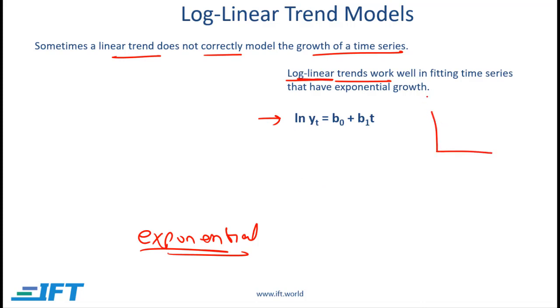So with log linear trend models the y-axis will be the natural log of some variable. If our variable is y then we say natural log of y and the x-axis would be time. So you might wonder where this is coming from. When we have exponential growth we basically say that y is equal to e to the power of b₀ plus b₁t. So exponential growth in y with respect to variable t is represented like this.